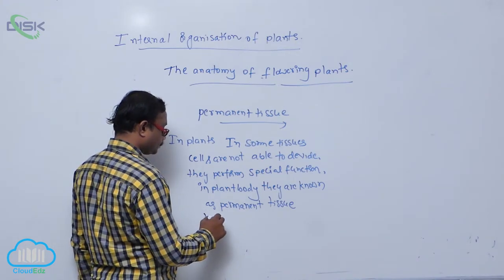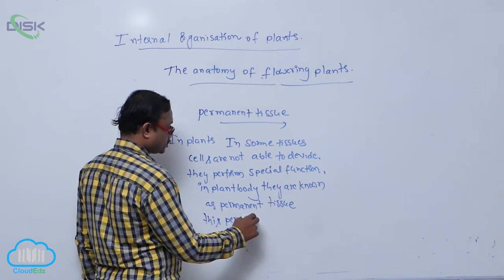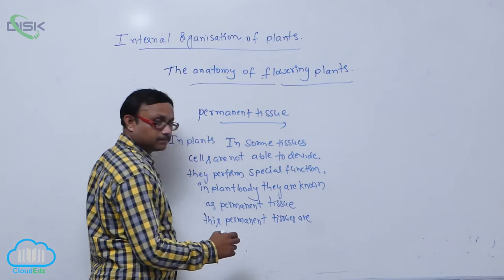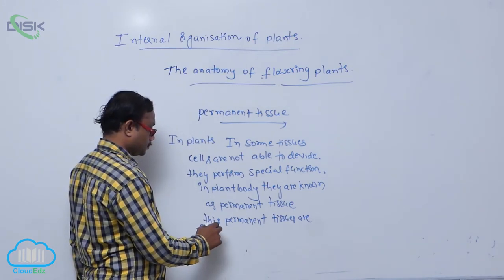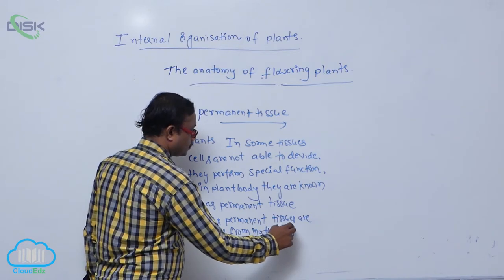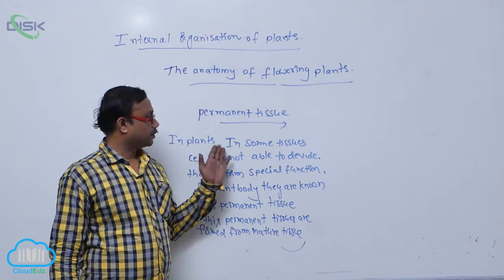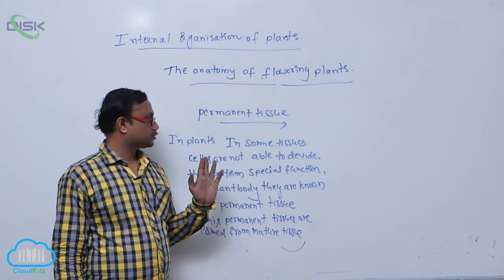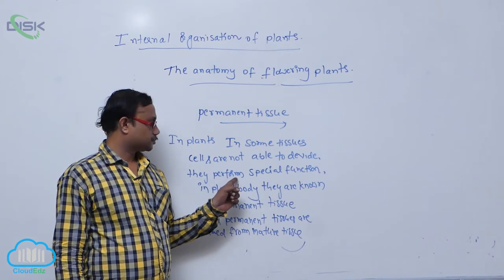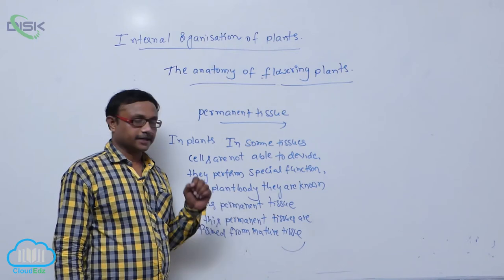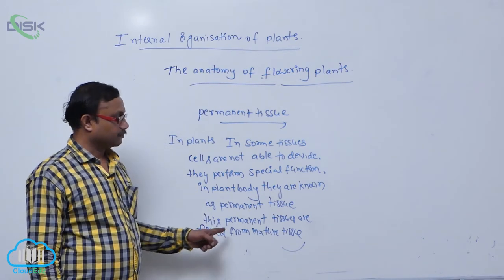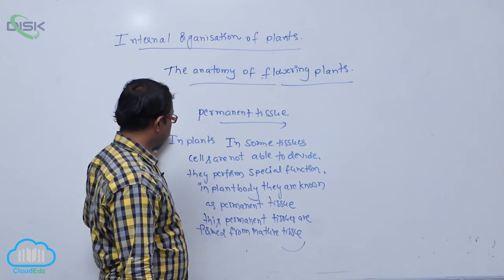This permanent tissue is formed from mature tissue. In plants, in some tissues, cells are not able to divide. They perform special functions in the plant body. They are known as permanent tissue. These permanent tissues are formed from mature tissues.